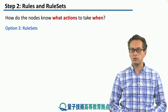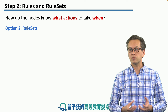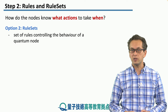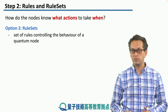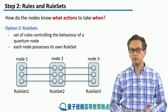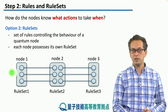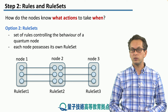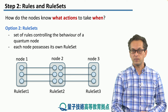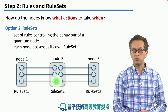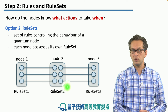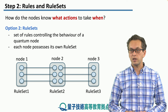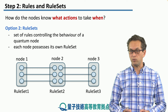The second option we're going to consider is what are known as rule sets. These are a set of rules controlling the behavior of a quantum node. For example, here we have three nodes — node 1, 2, and 3 — and each node has its own rule set: rule set number 1 for node 1, rule set number 2 for node 2, and rule set number 3 for node 3. These rule sets tell the nodes how to behave, what to do, and when.